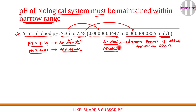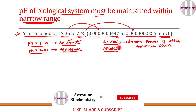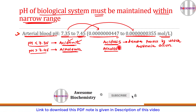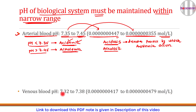Venous blood is slightly more acidic than arterial blood because all metabolic end products are present in venous blood. Venous blood pH ranges from 7.32 to 7.38, further confirming that the pH of biological systems is maintained within a very narrow range.